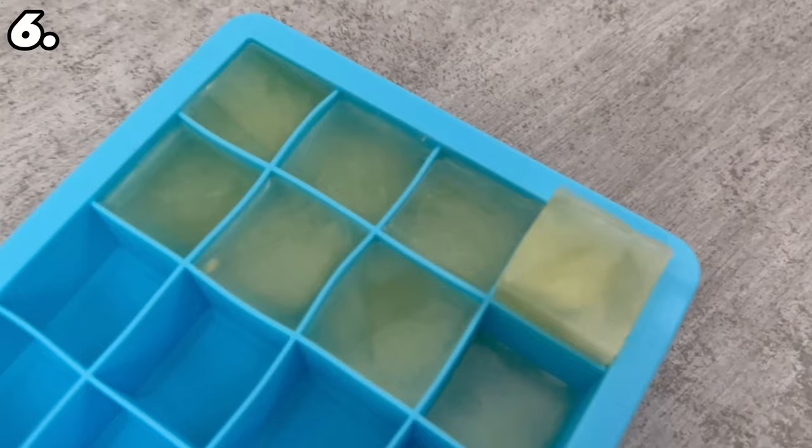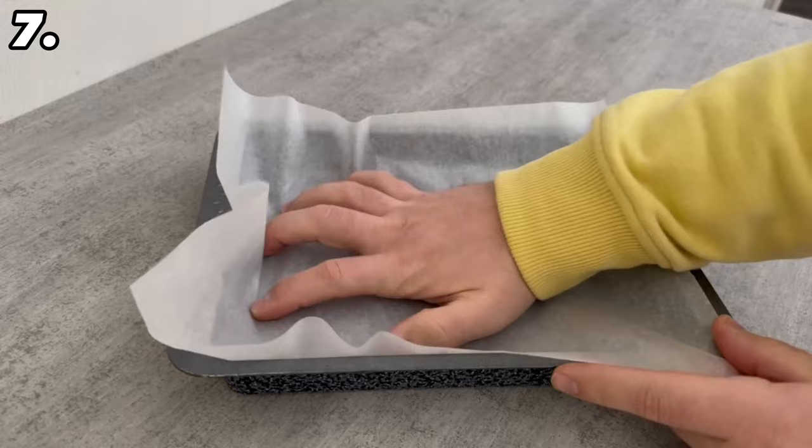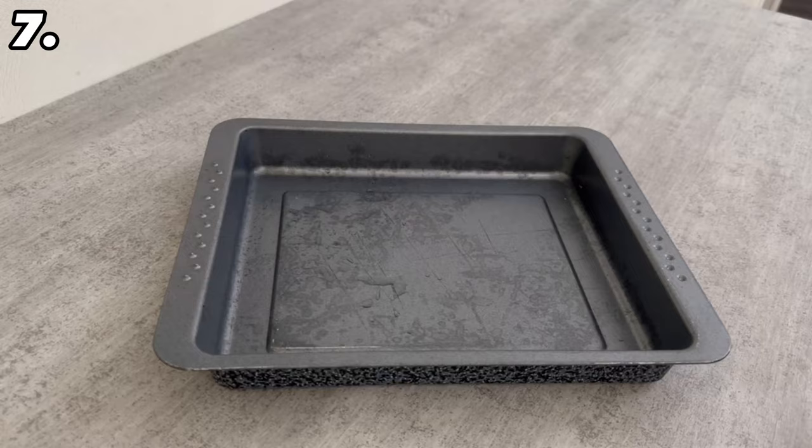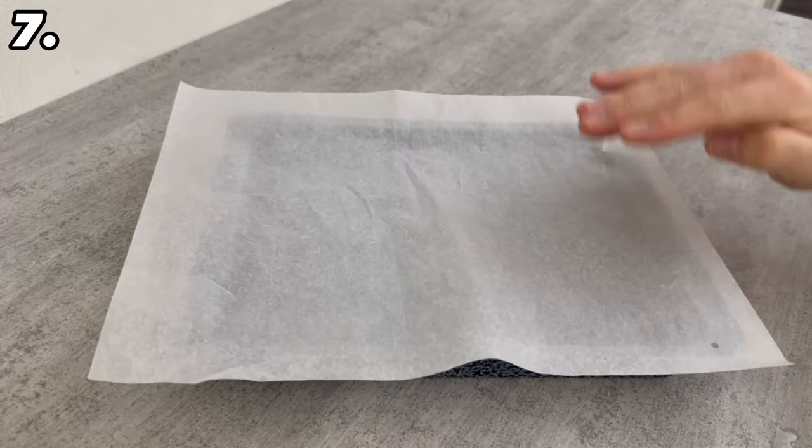If you regularly use parchment paper, you know this problem too. You want to fit it into a baking dish but it keeps popping back up. You just can't get it to fit perfectly. All you need to do for this is to spread a bit of water in your baking dish beforehand, preferably with a pastry brush. Distribute a small amount of water everywhere, even on the side edges.